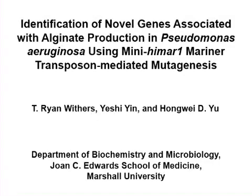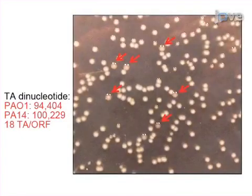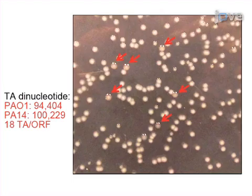The overall goal of this procedure is to identify novel genes associated with the production of the exopolysaccharide alginate in Pseudomonas aeruginosa using mini-Himar1 transposon mediated mutagenesis. This is accomplished by first growing two separate overnight cultures of the donor strain E. coli lambda pir carrying the PFAC plasmid and the recipient cells Pseudomonas aeruginosa PAO1.